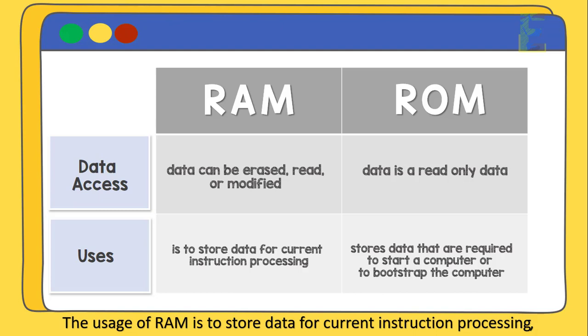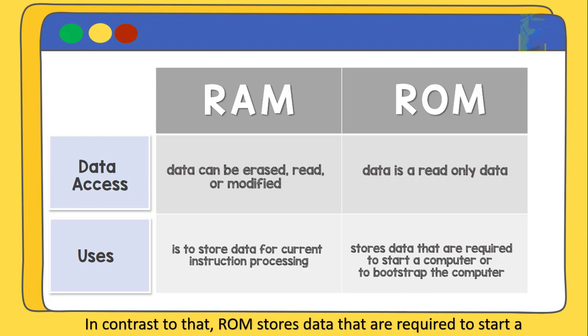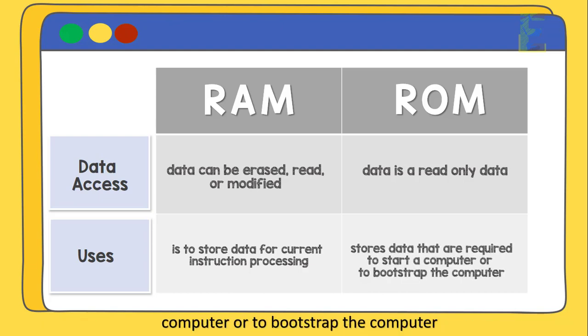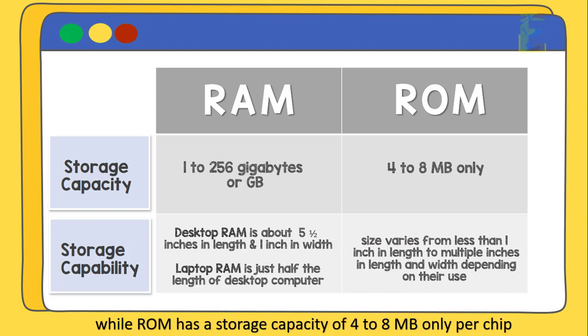The usage of RAM is to store data for current instruction processing, like opening an application, opening a new tab, or storing data while playing games. In contrast, ROM stores data that are required to start a computer, or to bootstrap the computer. RAM has a storage capacity from 1 to 256 GB per chip, while ROM has a storage capacity of only 4 to 8 MB per chip.